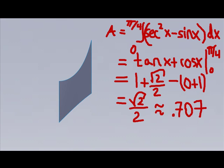Integrating secant squared x gives me tangent x. Integrating minus sine x gives me a positive cosine x. And I will evaluate these functions from 0 to pi over 4.